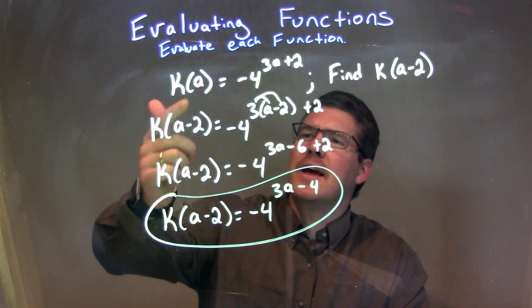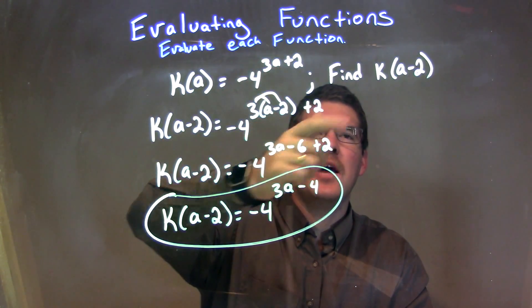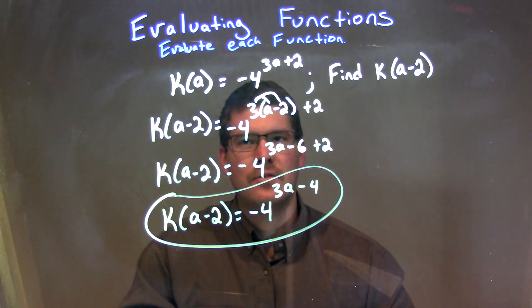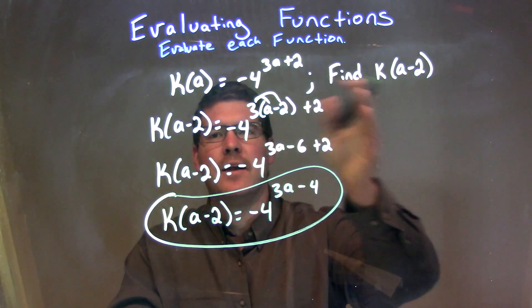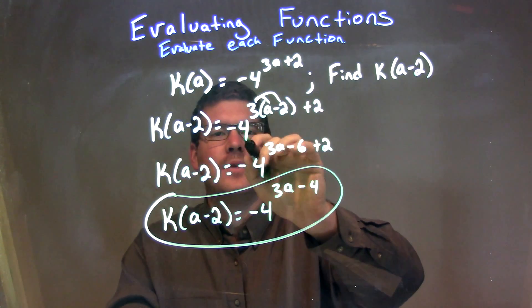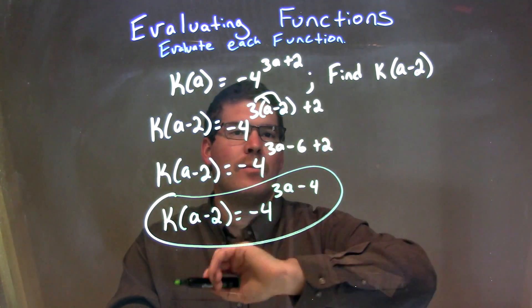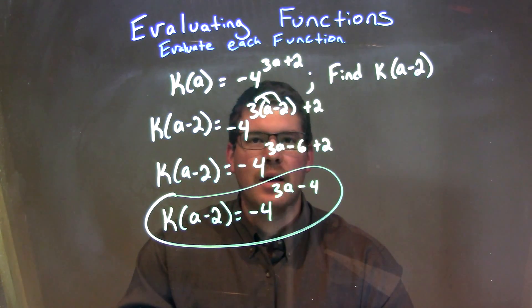Let's recap. We're given k of a is equal to negative 4 to the 3a plus 2 power. We defined k of a minus 2. Every single time we see an a, we plug in an a minus 2. Right there. And then, k of a minus 2 is equal to negative 4 to the power of 3 times that a minus 2. That's what the second one was. And then we add the 2 in the exponent.